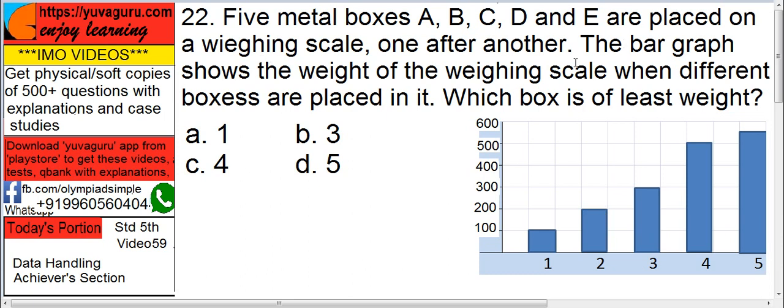Of the weighing scale when different boxes are placed, which box is of least weight? For finding the least weight, you have to subtract each one from the other. So one minus two - here one is placed first, then the weight is this much. Two is placed, then one and two combined weight is this much.